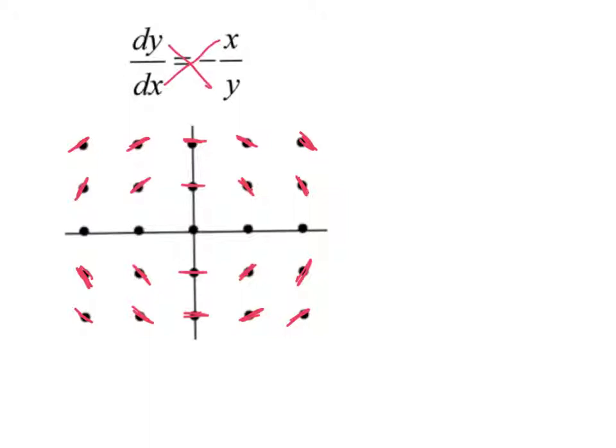I'm going to cross multiply. So I end up with y dy equals negative x dx. Very algebraic. I just got all the x stuff together and all the y stuff together. Now I integrate.